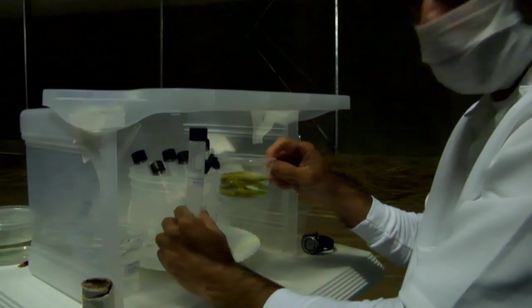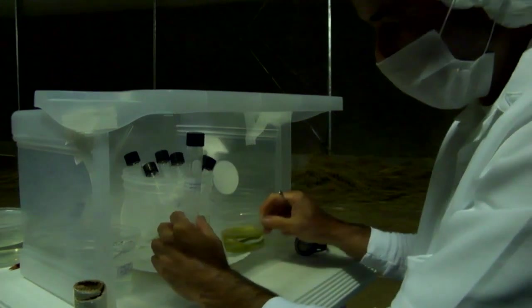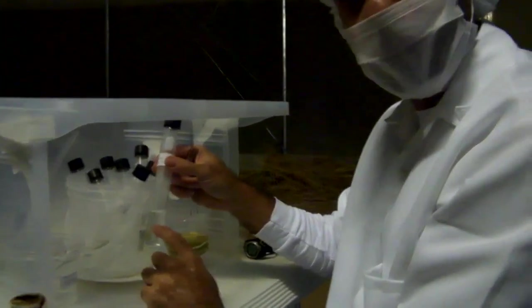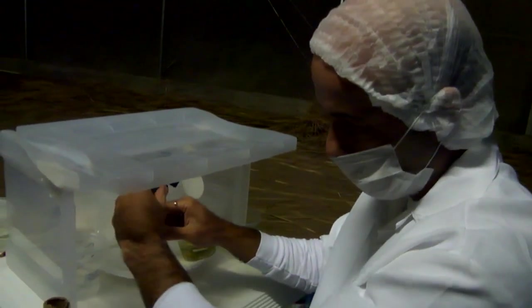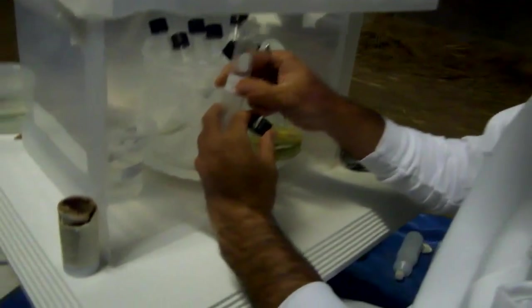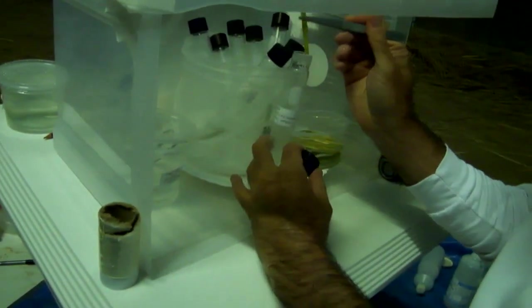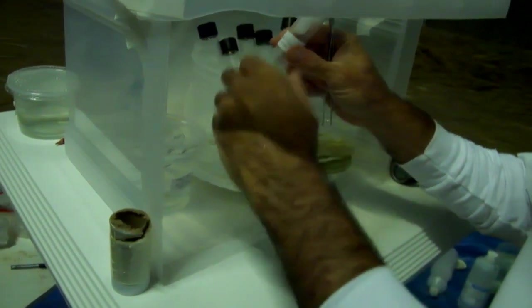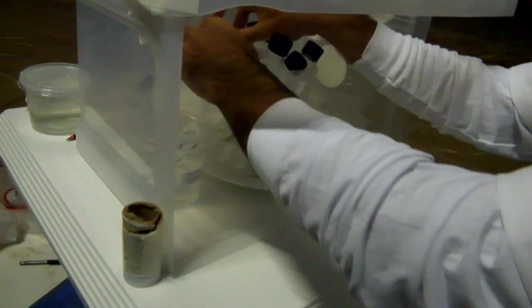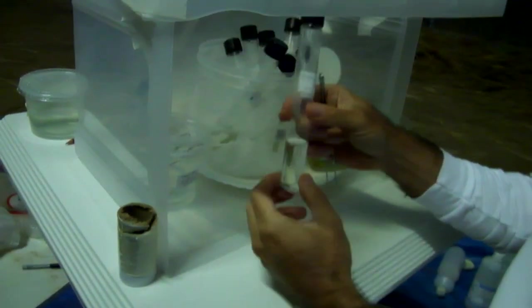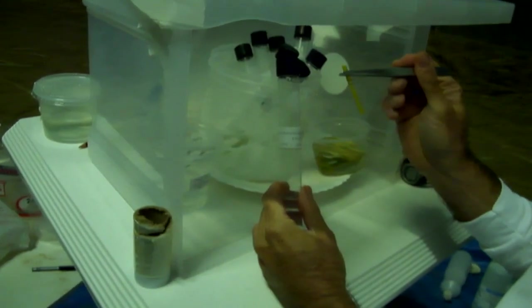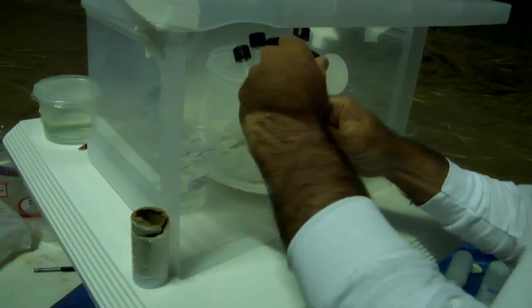So now we are going to put these stalks, vetiver stalks, in the tube with liquid media, no agar, only MS media. We are going to open these tubes and put the stalks inside like this. And you close and you do again with another one. So liquid media with no agar, these stalks with nodes of vetiver.